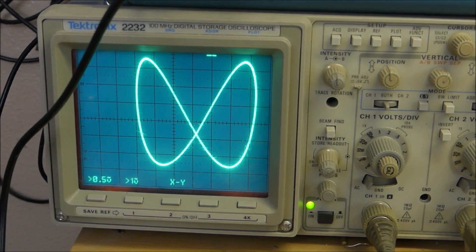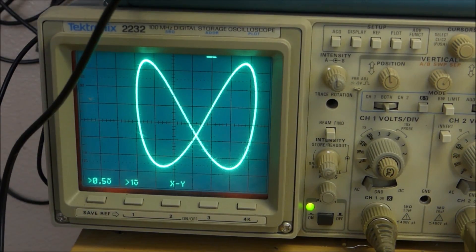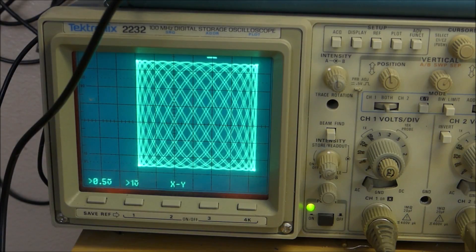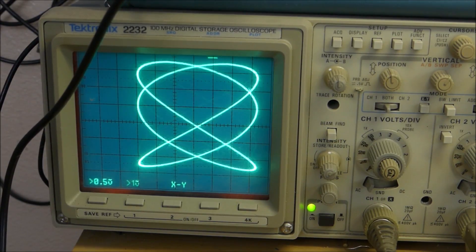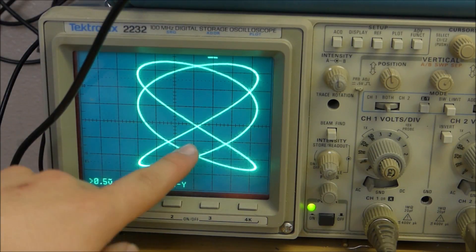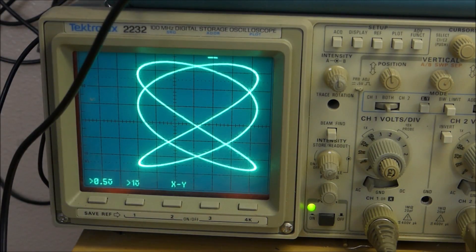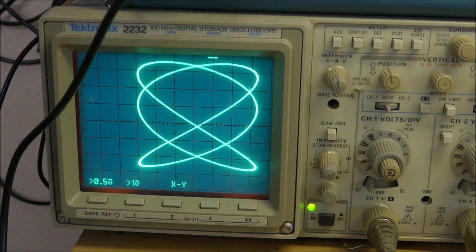The ratio is 1 to 2. We can see this by changing the frequency down to 10 kilohertz and we see that the ratio of 1 to 3 creates a shape that looks like this.